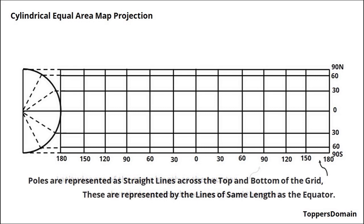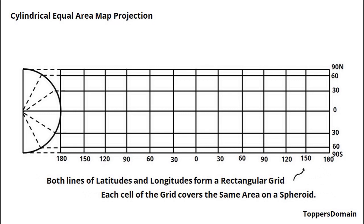Another unique characteristic of the Cylindrical Equal Area Projection is the representation of the poles. As one can see, the poles are portrayed as straight lines across the top and bottom of the grid, mirroring the length of the equator. This representation ensures an accurate depiction of the areas near the poles.